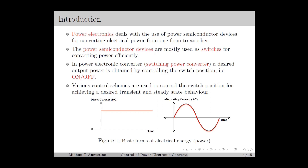Power electronics is a branch of electrical engineering which deals with the use of power semiconductor devices for converting electrical power from one form to another. In general, electrical energy is generated, transferred, and consumed in two forms: the direct current or DC, for which the current and voltage will be constant in the ideal case, and the alternating current or AC, for which the current and voltage will be sinusoidal in the ideal case.